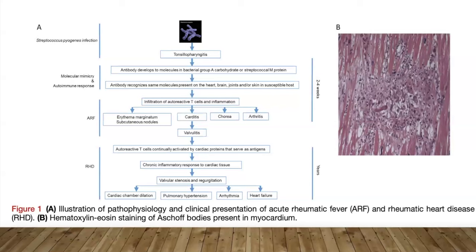The most commonly affected valve is the mitral valve. With valvular stenosis and regurgitation, we get multiple consequences including heart failure, pulmonary hypertension, and arrhythmia, most commonly atrial fibrillation.